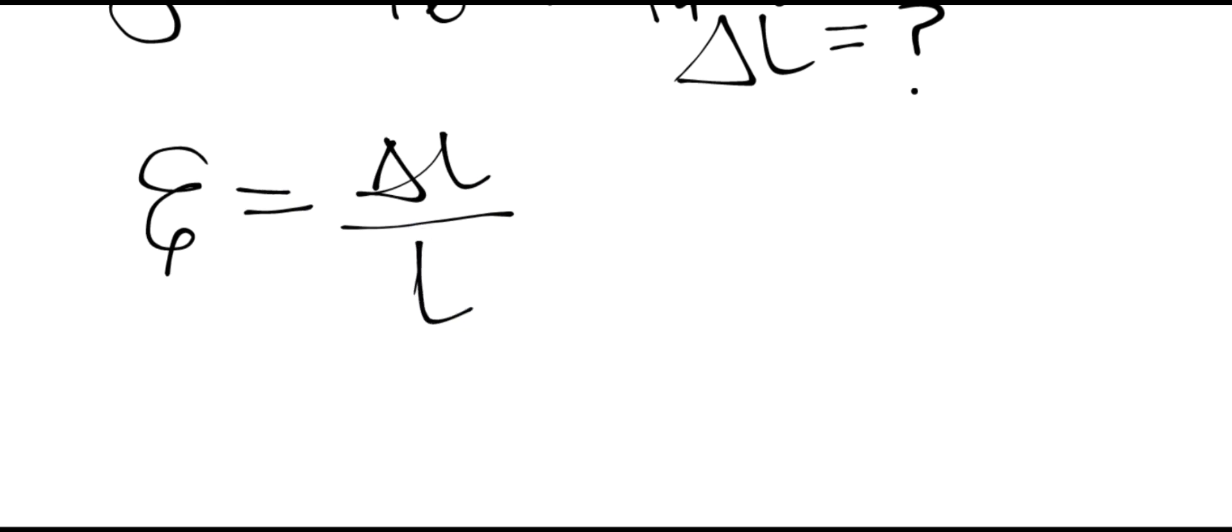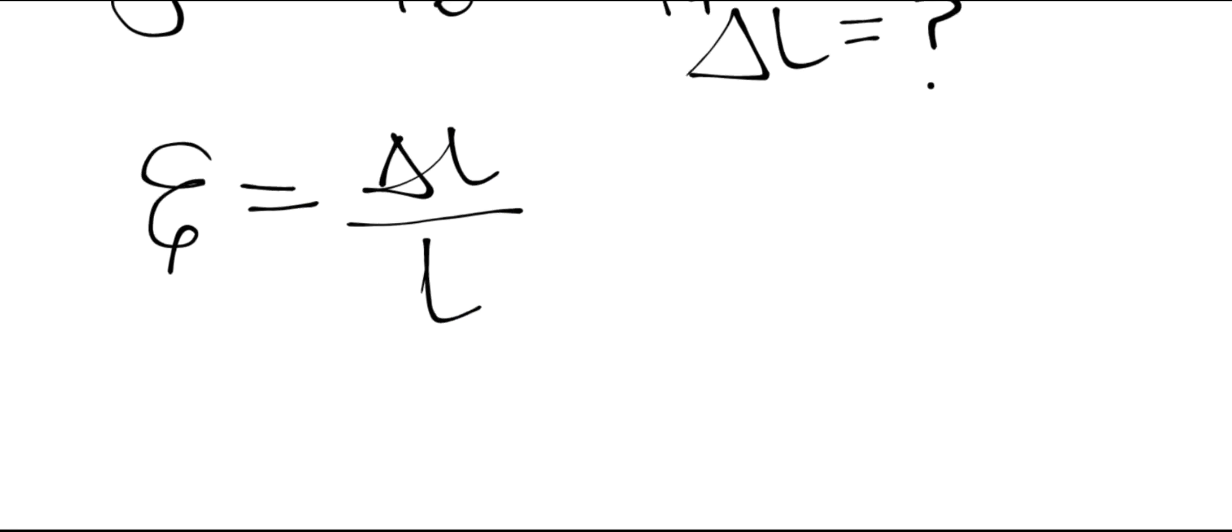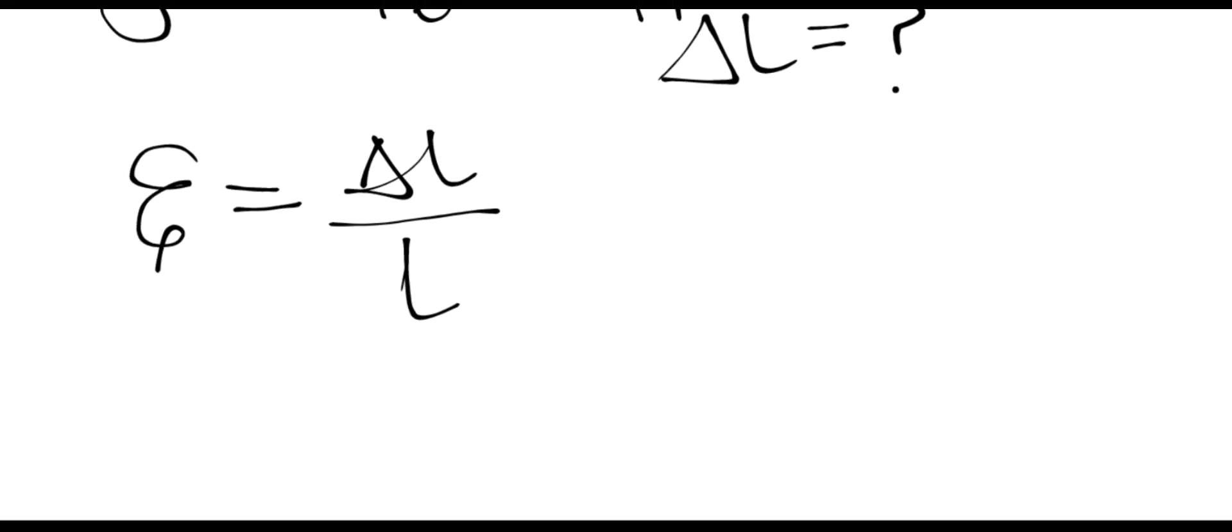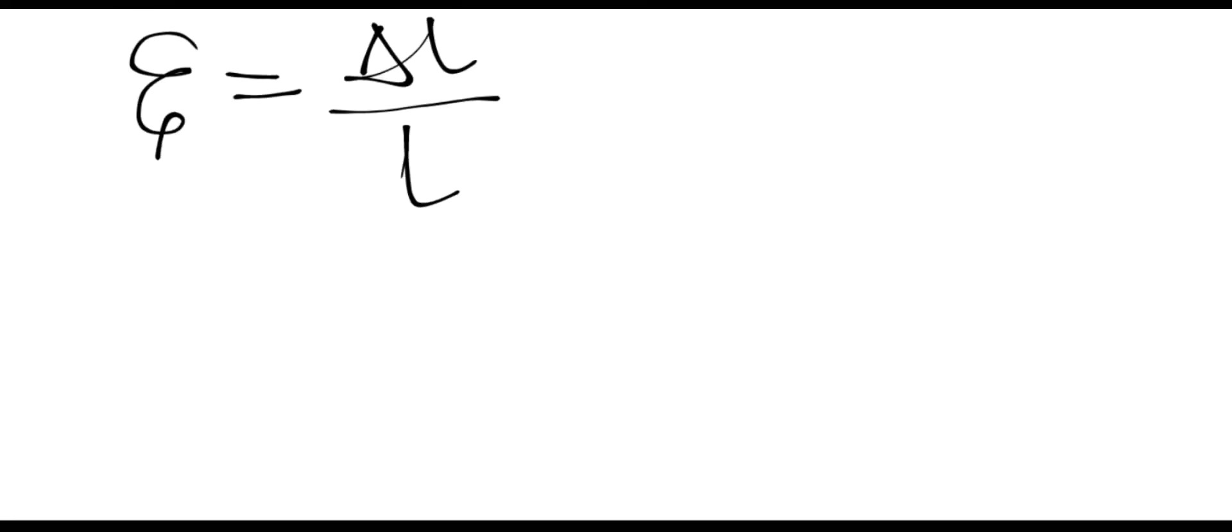Now we have two unknowns in this equation. We don't know the change in length, that's the elongation we have to find. Also we don't know the strain, we only have the original length. So to find the strain, we have the equation of stress is equal to Young's modulus times the strain.